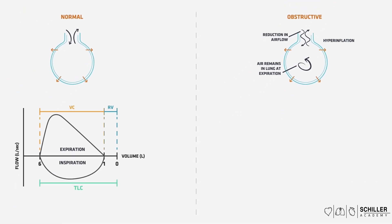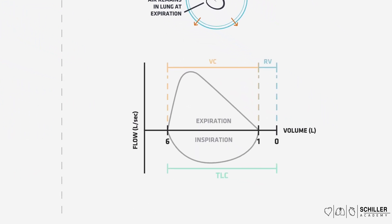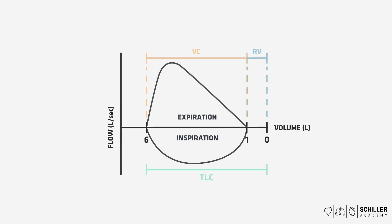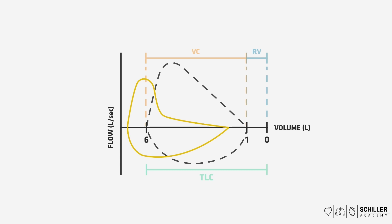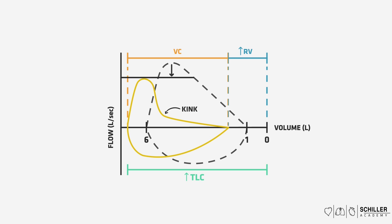Now let's have a look at this using spirometry and comparing it to the normal state on the left side. We are using the same graph with volume in liters on the x-axis and flow of air through the lungs on the y-axis. The black line represents normal forced vital capacity. This example shows obstructive lung disease — the whole graph shifts to the left because of an increase in residual volume and an increase in total lung capacity to more than 6 liters. The vital capacity or forced vital capacity remains the same, but the total lung capacity has increased because of the increase in residual volume. You can also see the characteristic kink in obstructive lung disease patients during forced expiration because of the obstruction, and the flow decreases slightly.